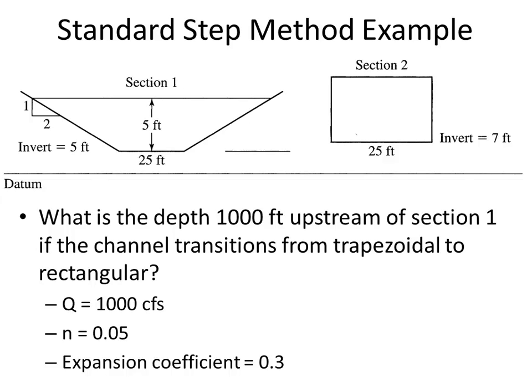Section one is downstream, and the flow depth there is five feet. Before going to the spreadsheet, I'll classify the water surface profile at section one so we can make an informed initial guess about whether the depth at section two is deeper or shallower. Downstream is a trapezoid; upstream is a rectangle. We start by finding the channel slope from the invert elevations and section spacing.